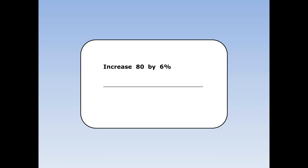Increase 80 by 6%. I want the original 100% plus an extra 6%, which is 106%. 106% is 1.06 as a decimal, so I'm multiplying 80 by 1.06. 80 times 1.06 is 84.8.